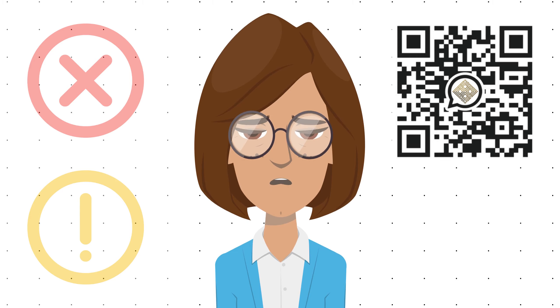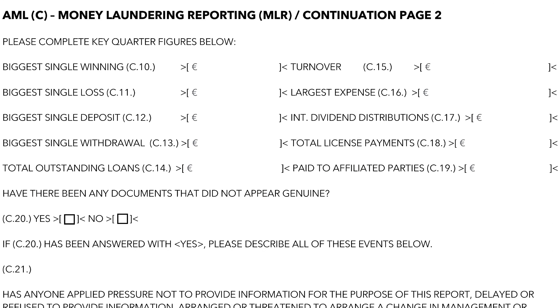Let's get back to the last couple of questions in the CQR. Under section C10 to C19, please provide the key quarter figures. These include figures on largest winnings, losses, deposits, withdrawals, loans, dividend distributions, expenses, and license payments.